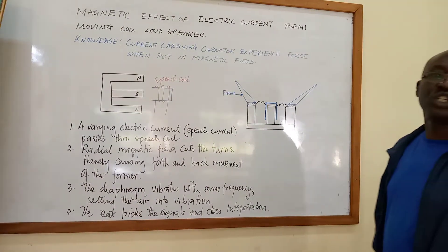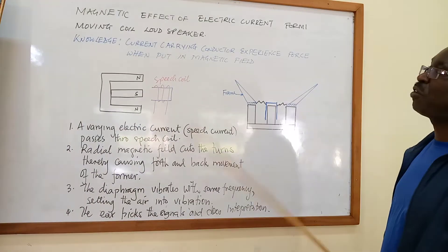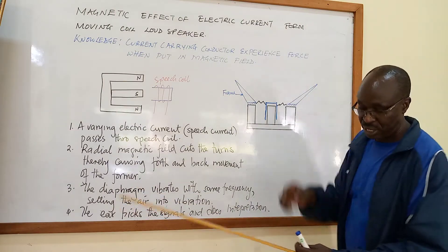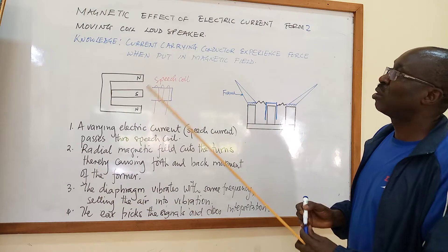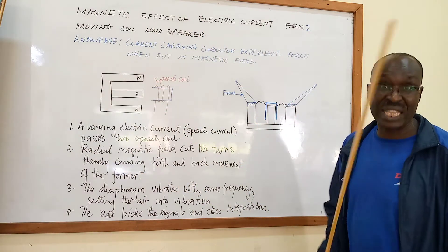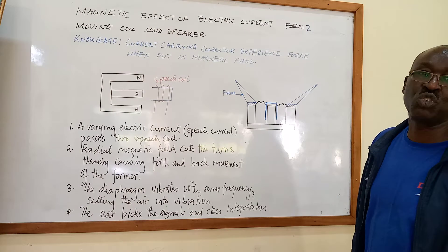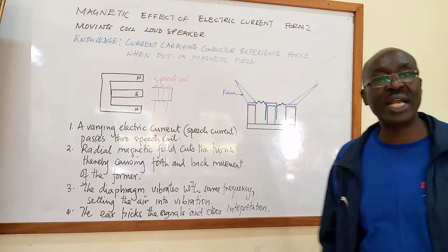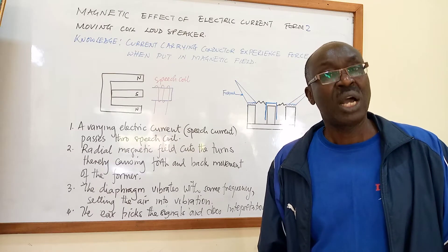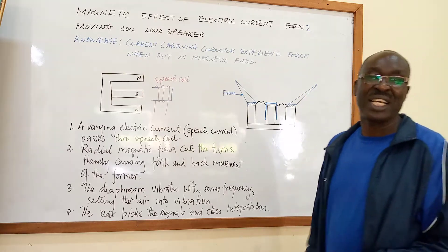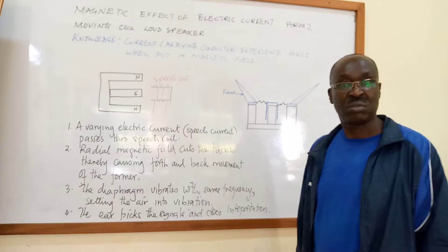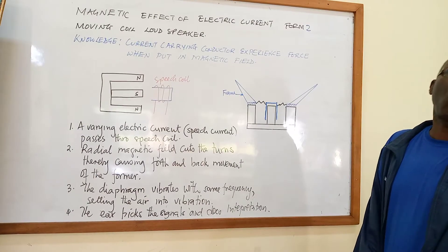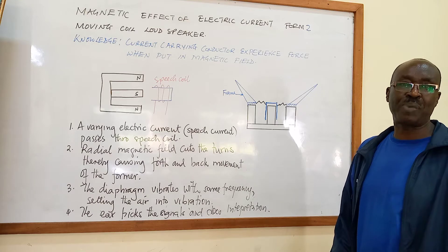Welcome once again. This is Form 2 — magnetic effect of electric current. What we are going to look at today is a device known as the moving coil loudspeaker. From that title you can see that there is a coil that moves. So we want today to explore how the moving coil loudspeaker functions.